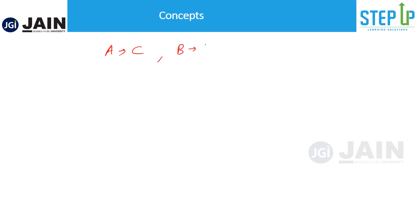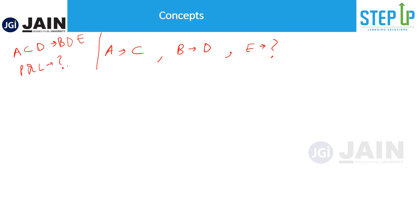Let's say there's an alphabet A and they say A becomes C, B becomes D — what do you think E will become? So they are replacing an alphabet by another alphabet. It need not be one; for example, A C D becomes B D E, so what will P Q L become?